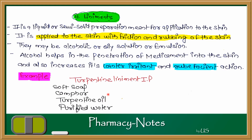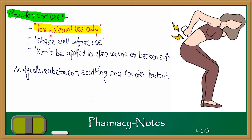Let's look at an example: Turpentine liniment, whose main effect is counter-irritant. It contains soft soap, camphor, turpentine oil, and purified water. Directions: it is for external use only, shake well before use, and it should not be applied on open wounds or broken skin, because it is counter-irritant and causes irritation. Uses include analgesic, rubefacient, soothing, and counter-irritant action.